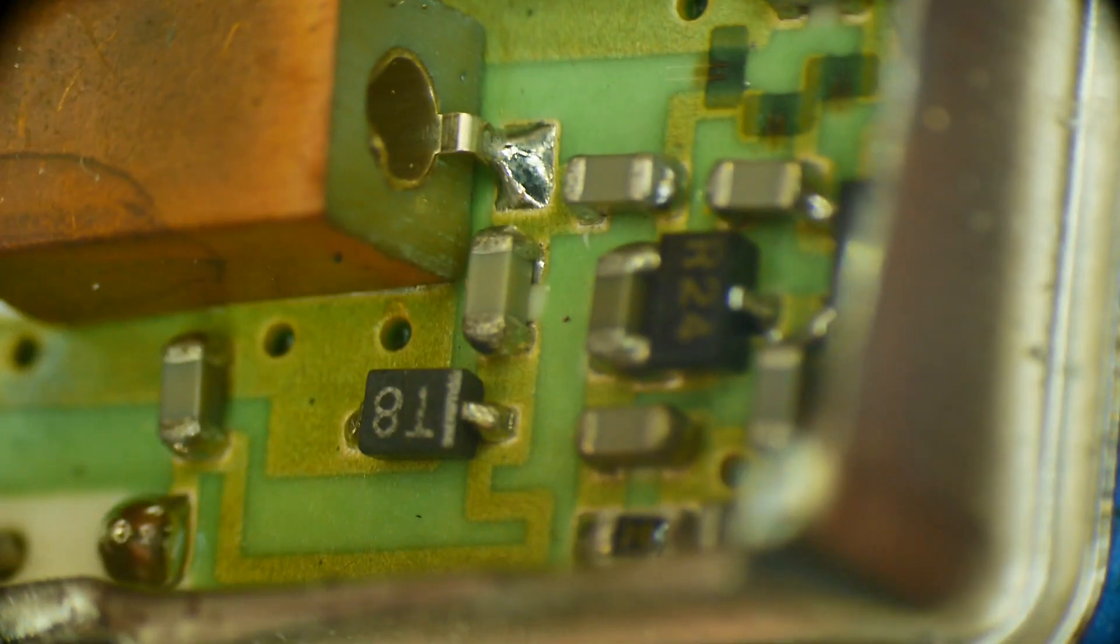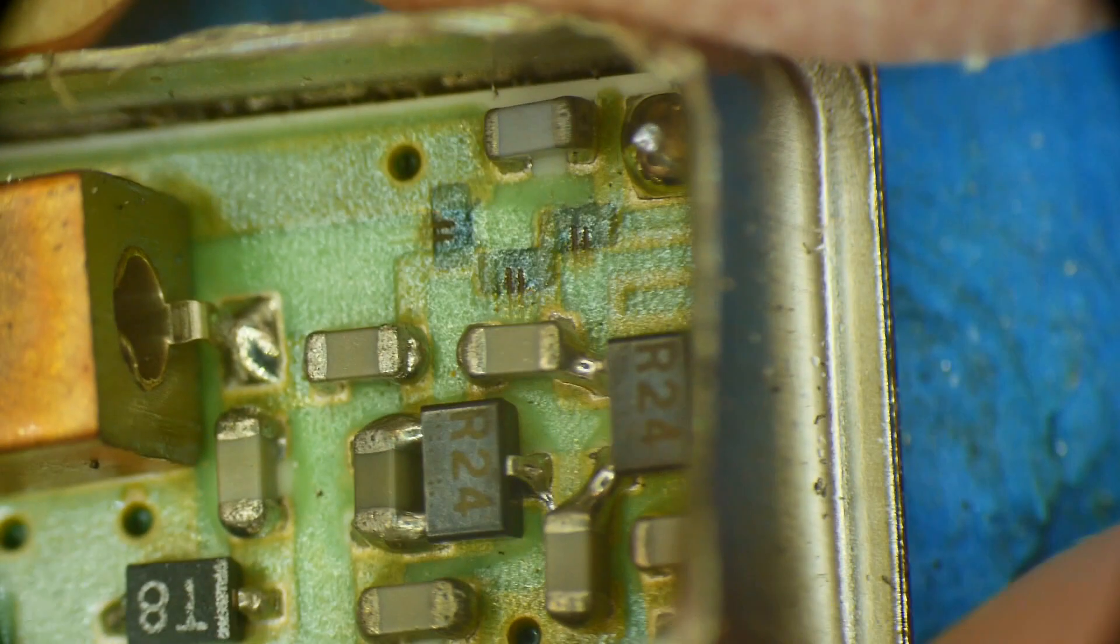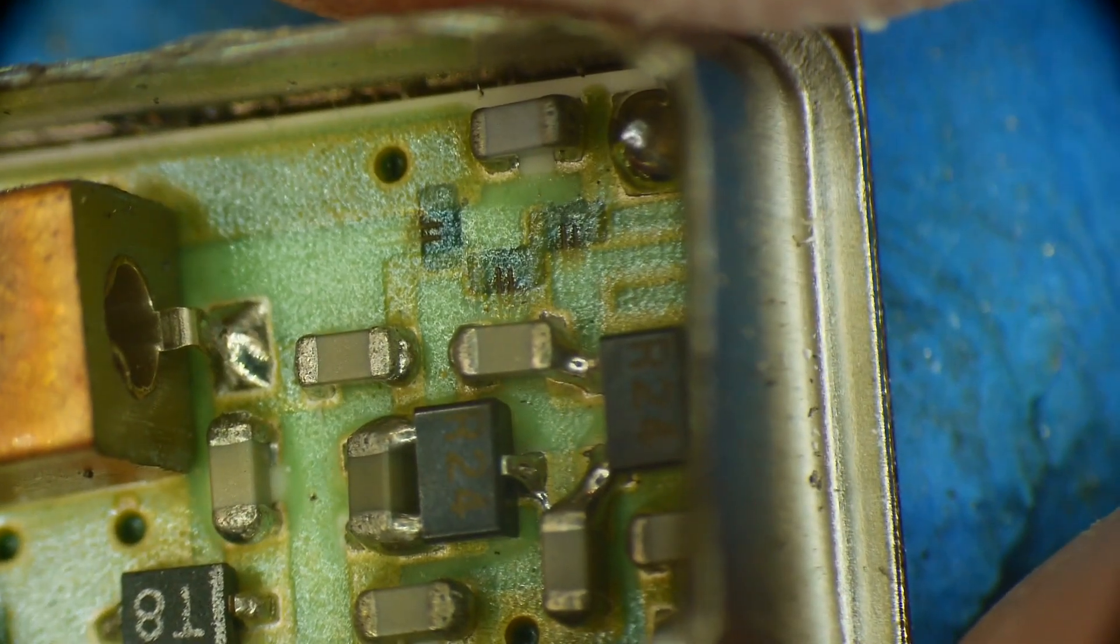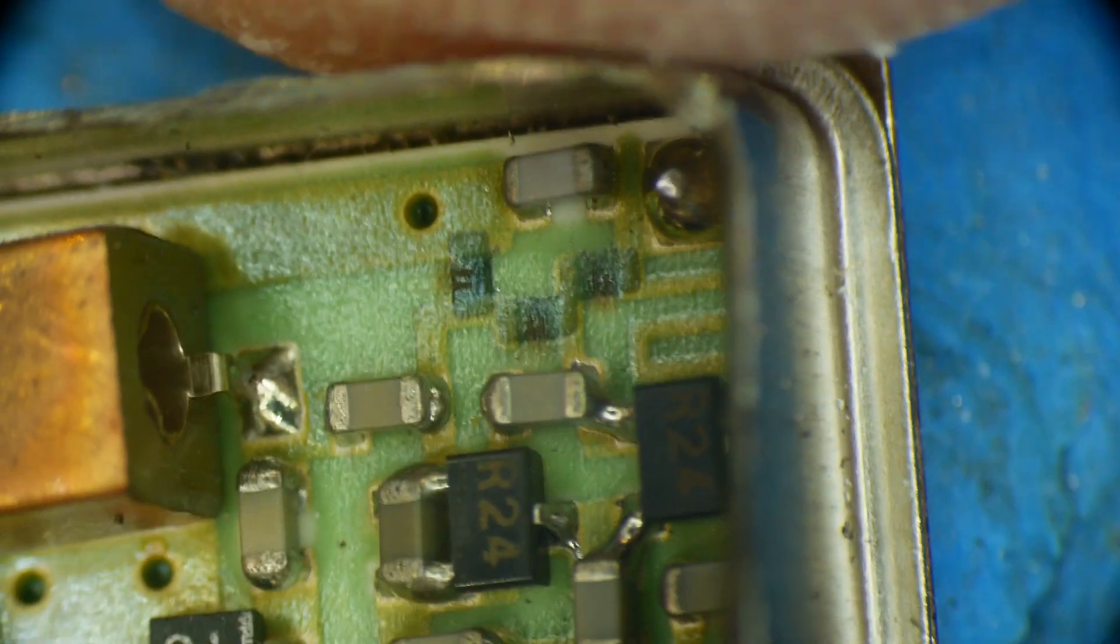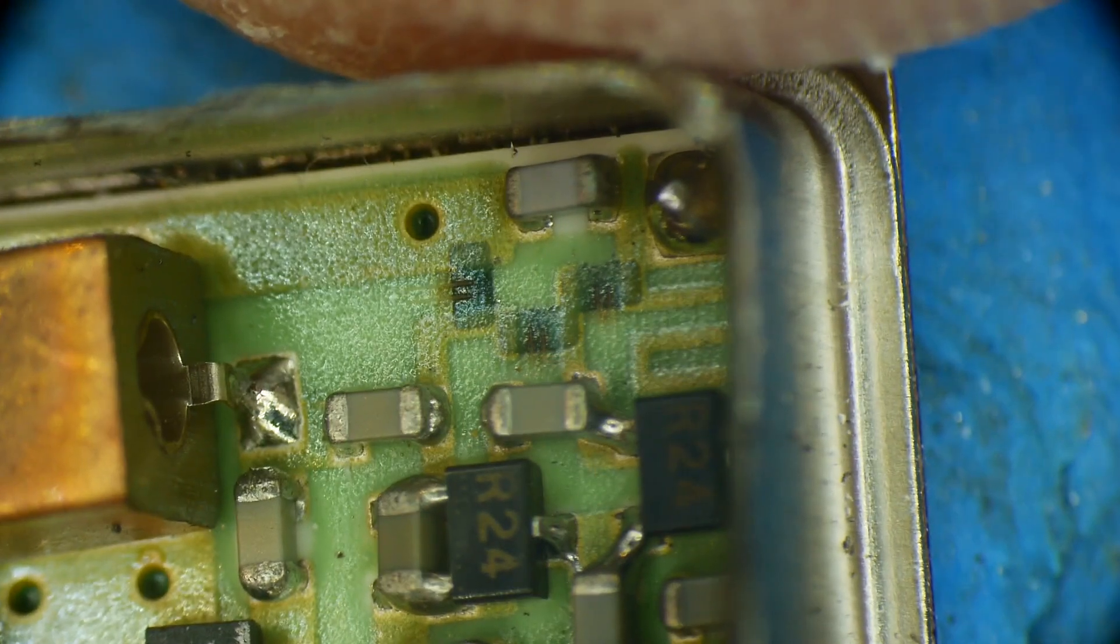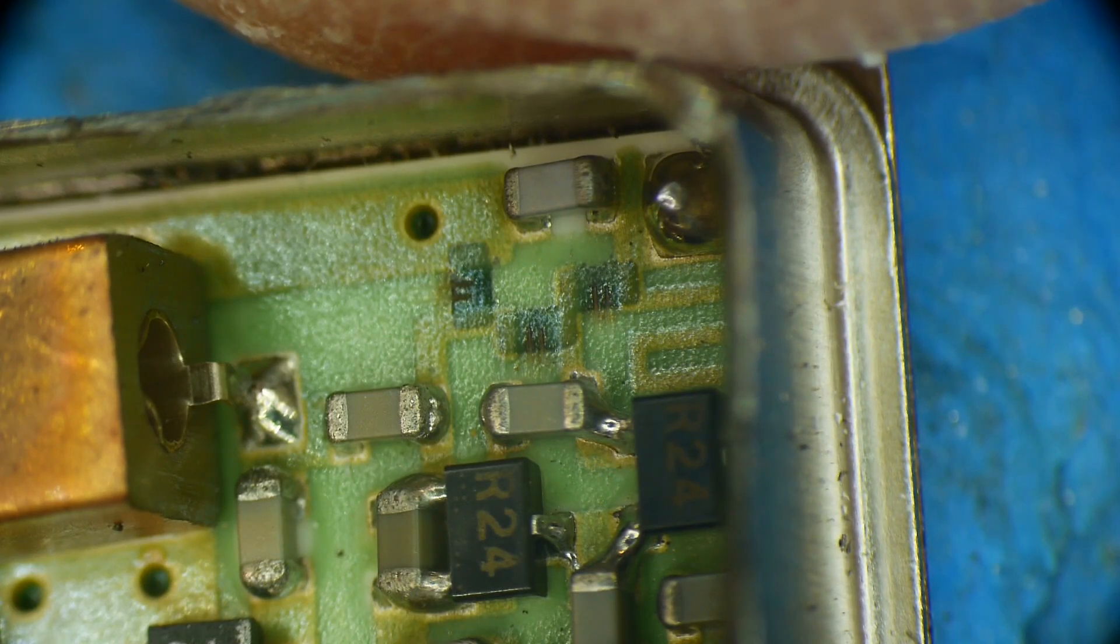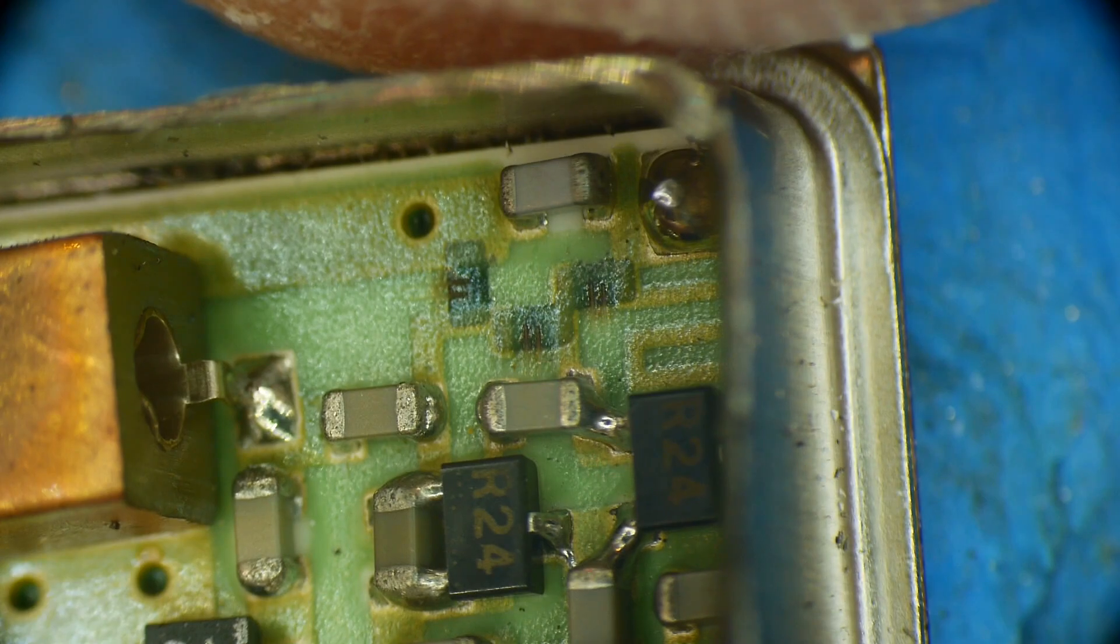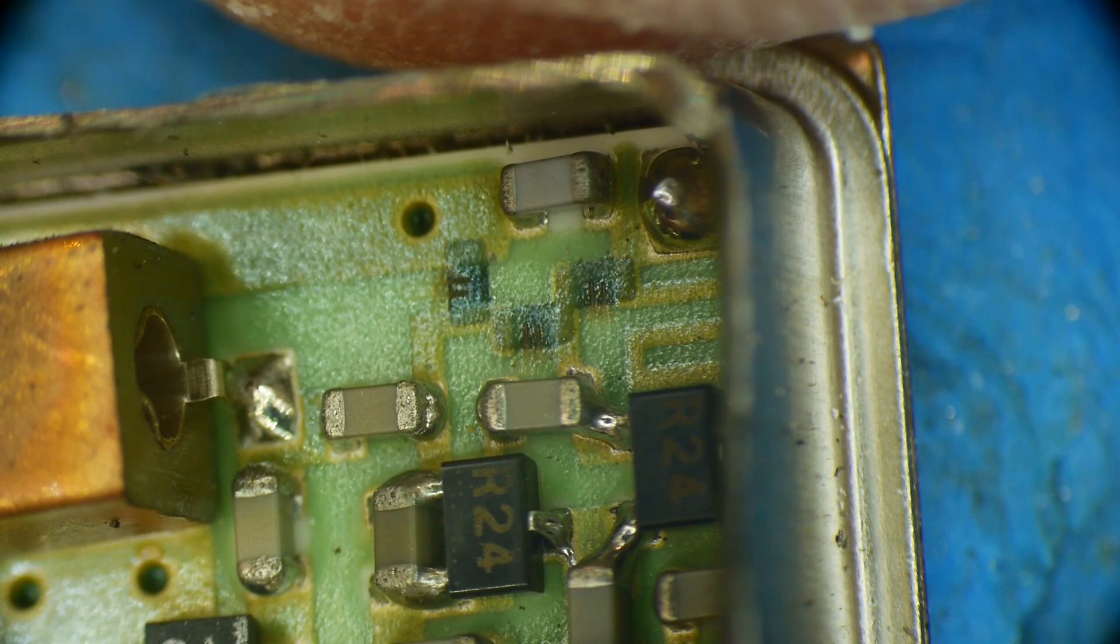And then this one has some interesting things in it as well. Let's see if I can get a good spot on those. See if I can, it's right there. So right in the center of the screen, there are three resistors that are laser trimmed. I'll try to get a better shot of that with higher magnification, but yeah, it's laser trimmed.